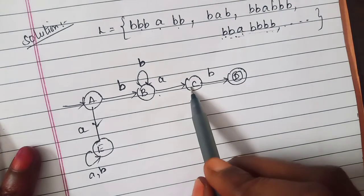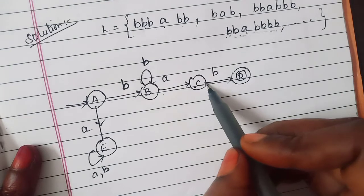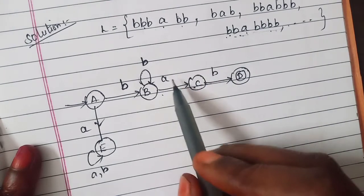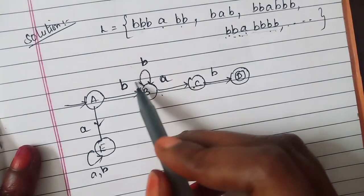So in this DFA you are having a is coming out and b is also coming from state B. And you are having a in state C where only b is available.